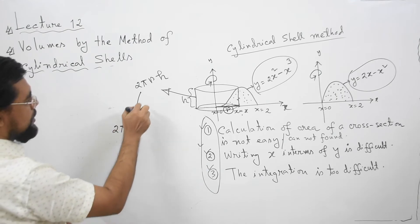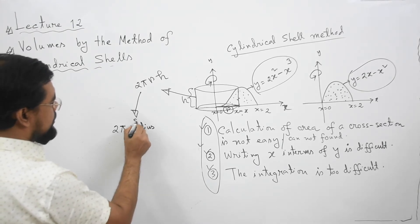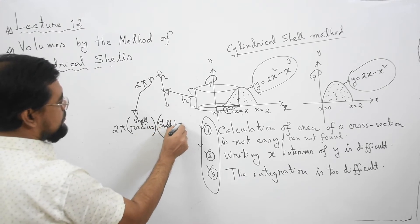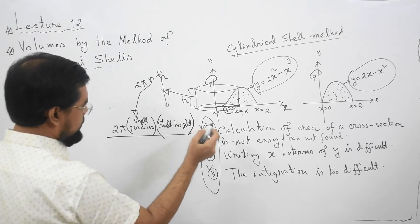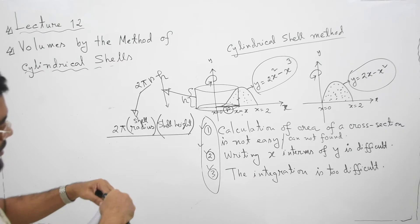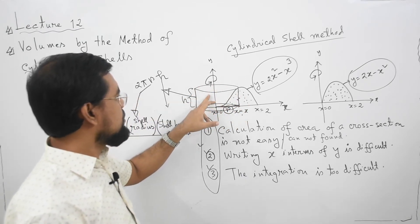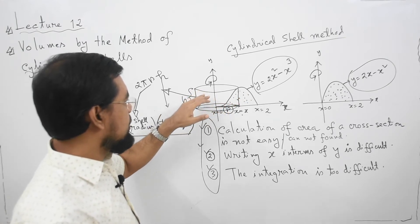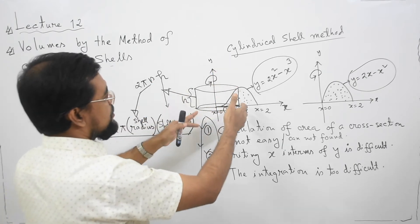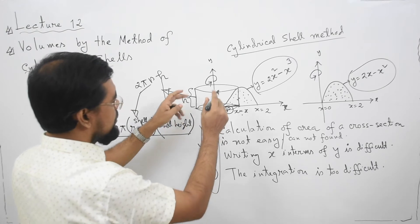Here r is the shell radius and h is the shell height. Now there is a key difference between the previous method and this method. From the previous method, we know that if we revolve the region about the y-axis, the cross-section is perpendicular to the y-axis. But here in the shell method, if you revolve your region about the y-axis, the cylindrical shell is perpendicular to the x-axis. So in this case, your formula will involve integrating with respect to x.